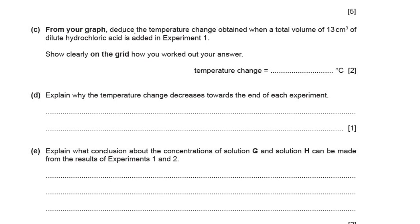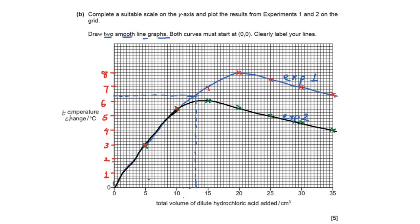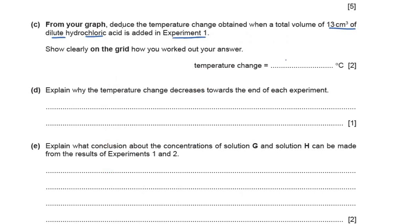From your graph, deduce the temperature change when a total volume of 13 cm³ of dilute hydrochloric acid is added in experiment 1. Show clearly on the grid how you worked out your answer. At 13 cm³ I have drawn a dotted line to find the temperature change, which is approximately 6.45°C. This question carries two marks: one for the correct answer and one for showing the working — the dotted line on the grid is necessary.